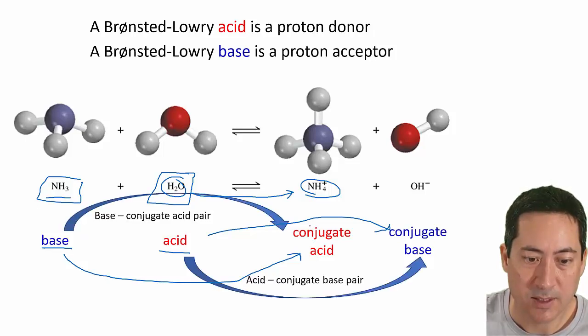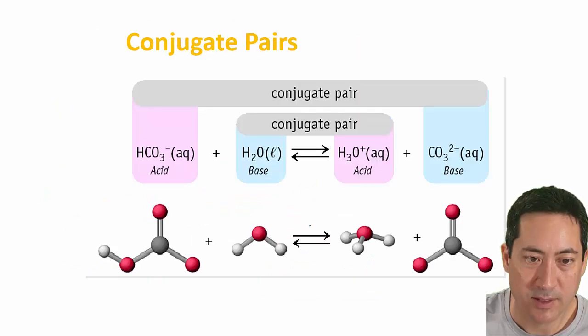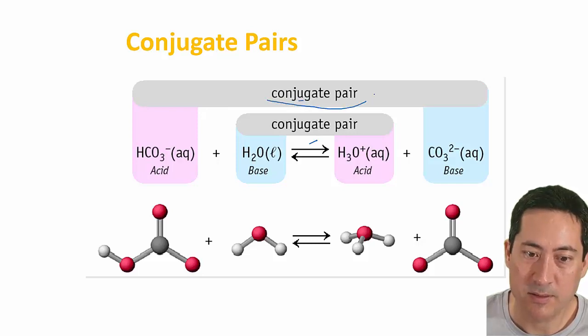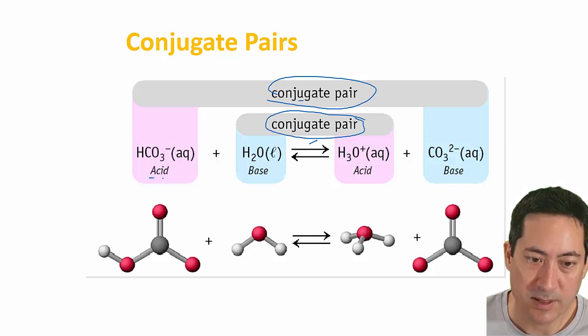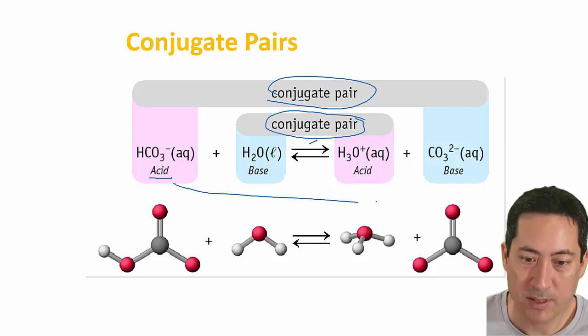So on the next slide, hopefully it's a little bit clearer. These are the conjugate pairs. You may be asked to say what the pairs are in the equation. This is the acid, and then it gives off the H+.